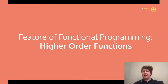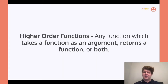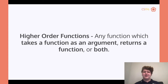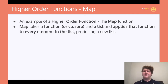Now we can take this idea of closures and apply it to the idea of higher order functions. A higher order function is a function which takes a function as an argument — which is kind of crazy — and it could also return a function, or it could do both. A map function in Rust will take a function or closure and a list, and then it will apply that function to every element in the list.